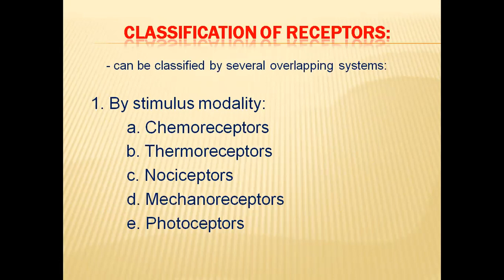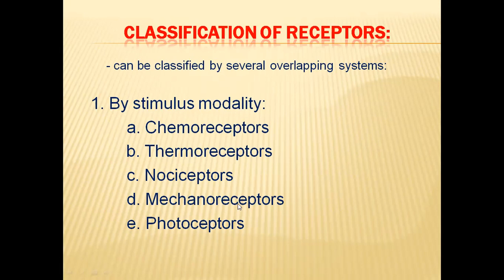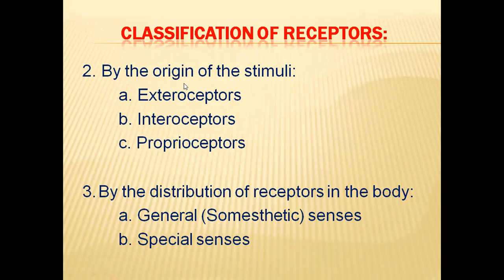Receptors are classified based on different features. By stimulus modality, receptors are classified into five types: chemoreceptors (chemical signals), thermoreceptors (temperature-related signals — cool or hot), nociceptors (pain stimuli), mechanoreceptors (mechanical stimuli like pressure), and photoreceptors (light stimuli). By origin of stimuli: exteroceptors (stimulus from outside), interoceptors (stimulus from inside the body), and proprioceptors (from nearby areas related to body position and movement).